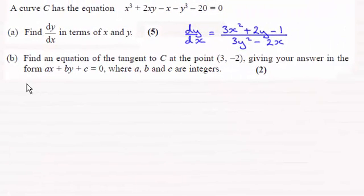Hi there. Now for part B of this question, we're asked to find an equation of the tangent to the curve C at the point (3, -2), giving our answer in this form where A, B, and C are integers.